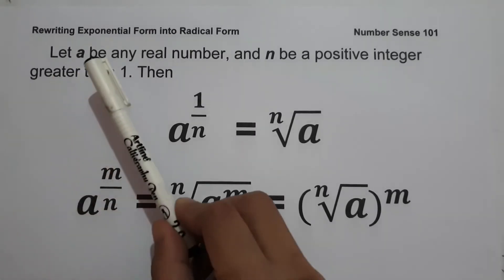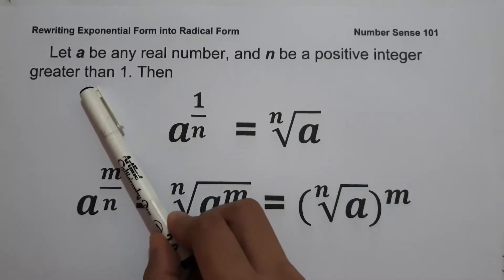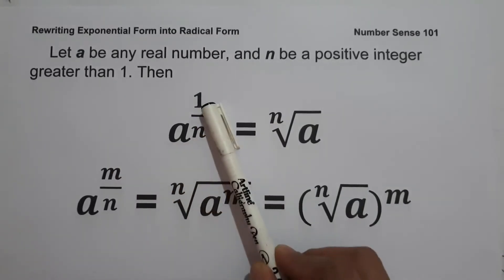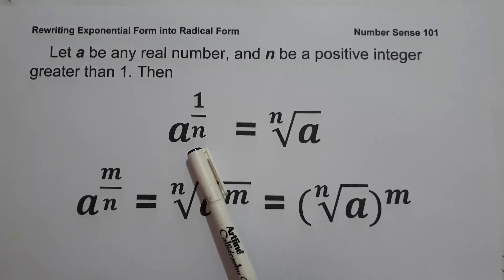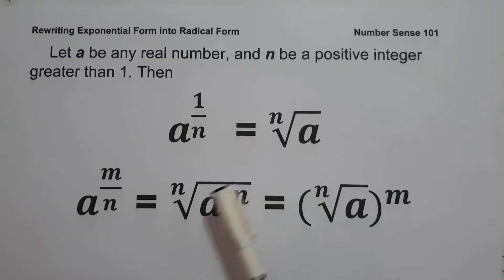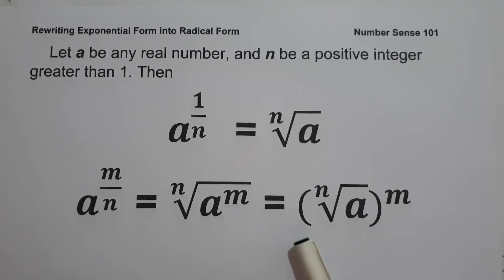Let a be any real number and n be a positive integer greater than 1. Then a raised to 1 over n, written in radical form, is the nth root of a. And if we have a raised to m over n, that is the nth root of a raised to m, or we can write it as the quantity nth root of a, raised to m.